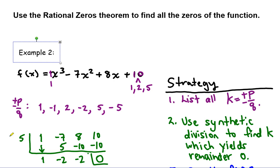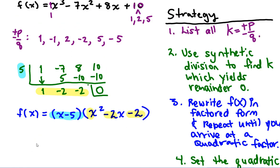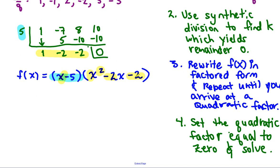Next step: I used the result from the previous step to write the first linear factor, and then used the bottom line of synthetic division to write the coefficients of a new polynomial factor — one degree lower than the unfactored form of f of x. So now I have two degrees of x in the quadratic factor and one more in the linear factor, giving three total. Now I have a quadratic factor, so I can jump to step four.